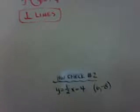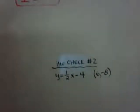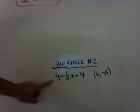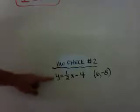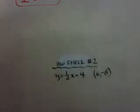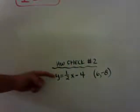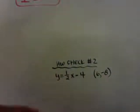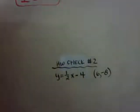My homework check number 2 is right here. Homework check 1 was parallel — this one, I want the perpendicular line: write the equation of a line perpendicular to the given line that goes through the given point. Leave it in point-slope form. Hope this helps. Have a great day.